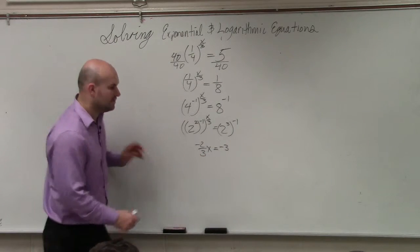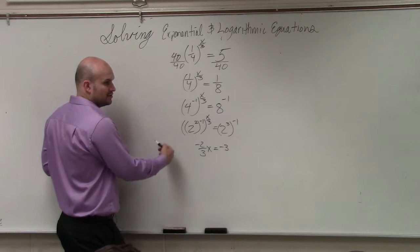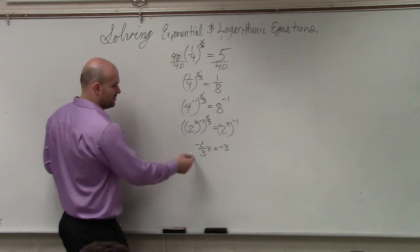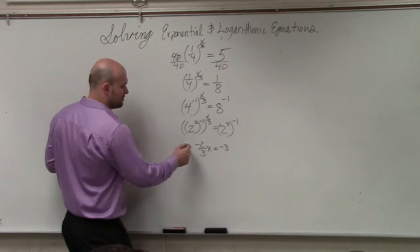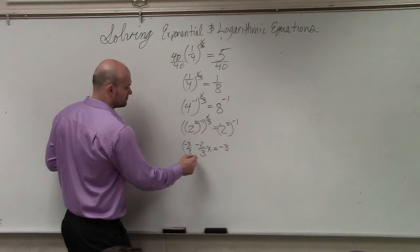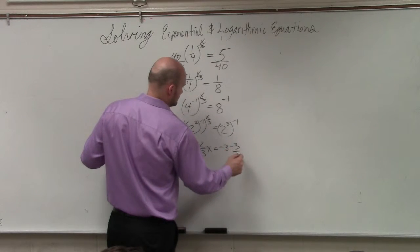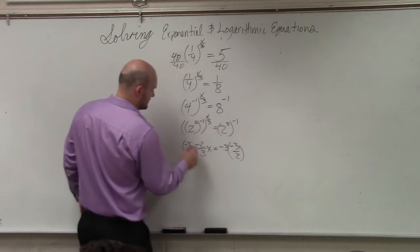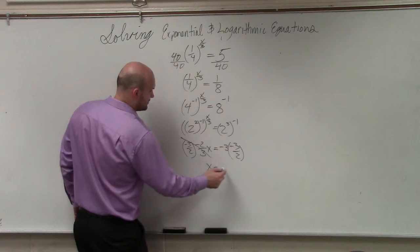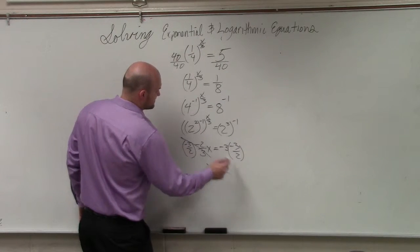So now I need to solve for x. You could multiply by 3 on both sides and divide by 2, or you could just multiply by the reciprocal. And I'd get x equals positive 9 halves.